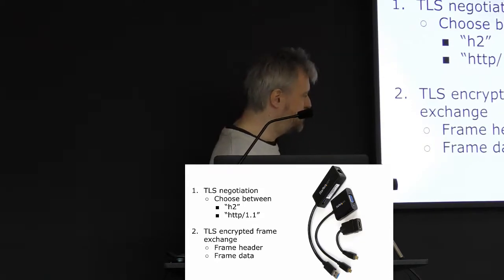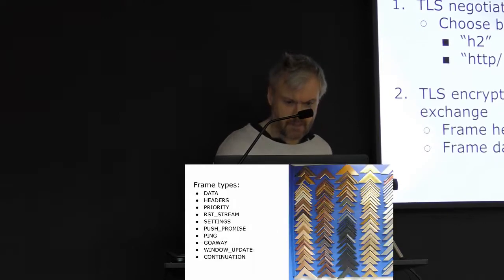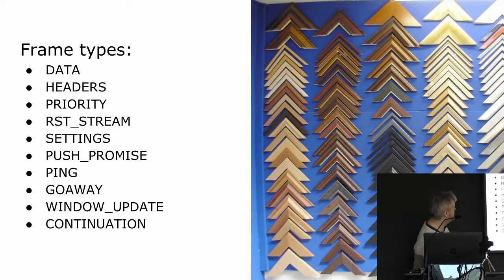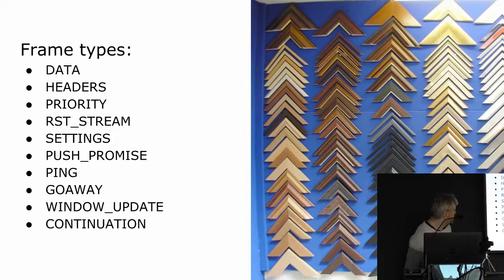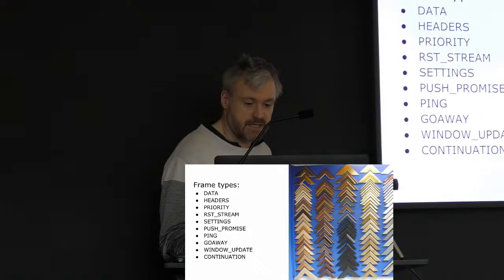One of these HTTP/2 frames consists of a frame header and a set of frame data. HTTP/2 defines a bunch of different frame types — I won't go into detail right now, but you'll see a bunch of these mentioned in the next slides. The idea is that both the client and server send these message frames, and the header specifies what kind of frame is being sent.